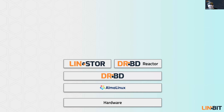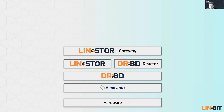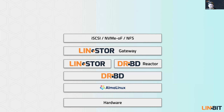Another component we use is DRBD Reactor. You may not have heard of it, so let me briefly explain. DRBD Reactor is basically a high-availability resource manager for DRBD-based clusters. We can use it to export iSCSI targets and more. Another crucial component is LinStore Gateway, which orchestrates LinStore resources and DRBD Reactor configuration to create highly available iSCSI targets, NVMe over Fabrics targets, and NFS exports.